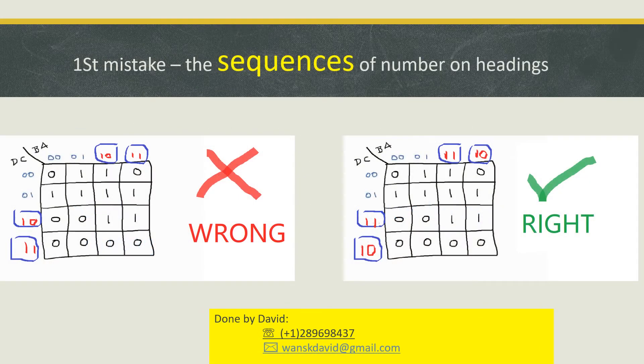The first mistake is the sequence of numbers on the headings. You might think the first heading should be 00, obviously, followed by 01, and then 10. This is wrong.